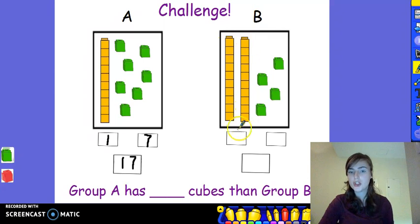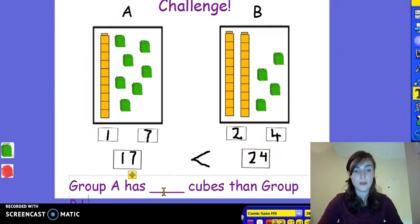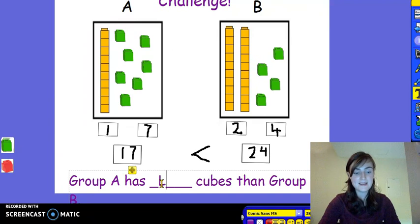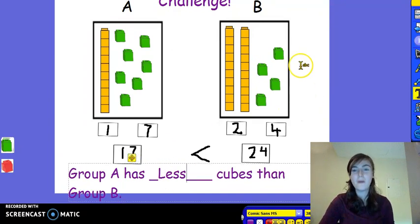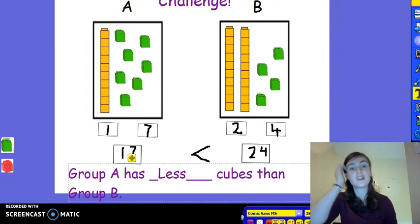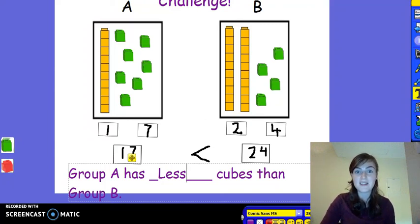In Group B, I can see 1, 2 groups of 10 and 1, 2, 3, 4 cubes. Group B has 24 cubes. Can you spot the bigger number? Well done! 24 is greater than 17. This means that Group A has less cubes, less cubes than Group B. Well done! You are so good at this. If you want to continue practicing at home, why not get some number cards and pick one? Then you can challenge yourself to show the number using cubes as fast as you can. Best of luck and have lots of fun! See you next time!